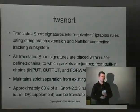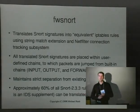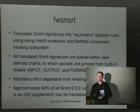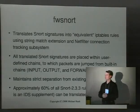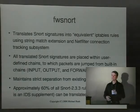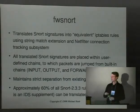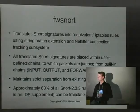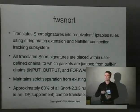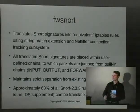All FWSnort rules that are created are placed within dedicated chains so that they never interfere with your existing IP tables policy. The translation rate is about 60% of all Snort 2.3.3 signatures translated into an IP tables rule set. I say Snort 2.3.3 because that was the last Snort release before the VRT licensing scheme was released — a proprietary licensing of the Snort rule set released by Sourcefire, so they're no longer released under the GPL.